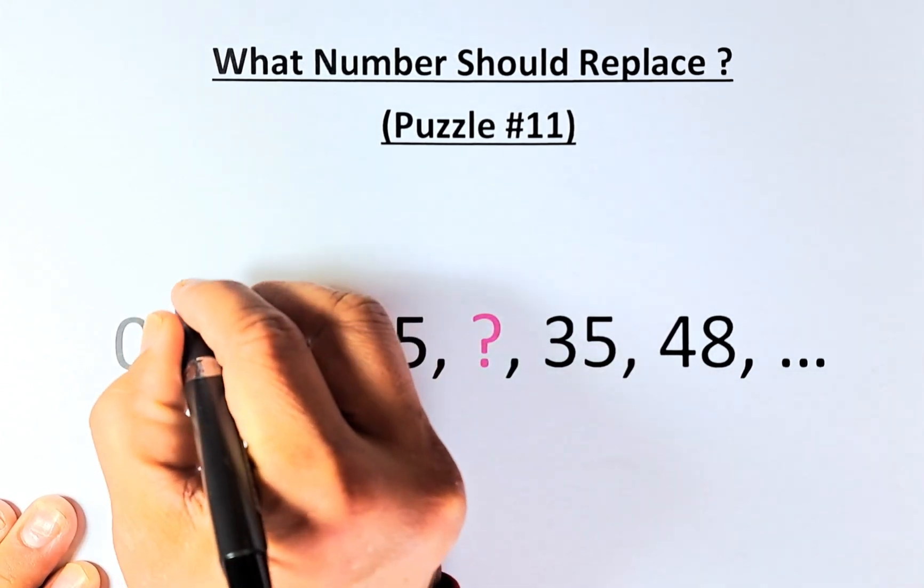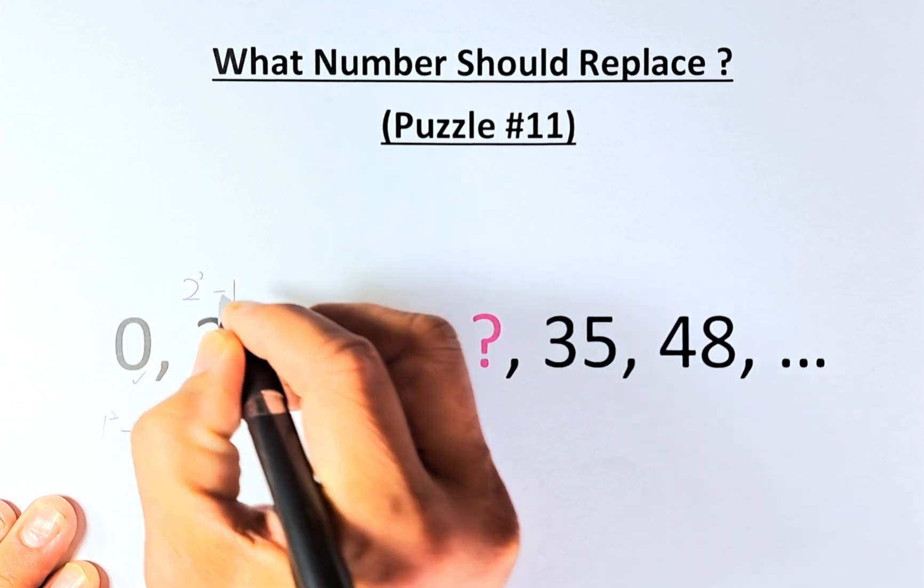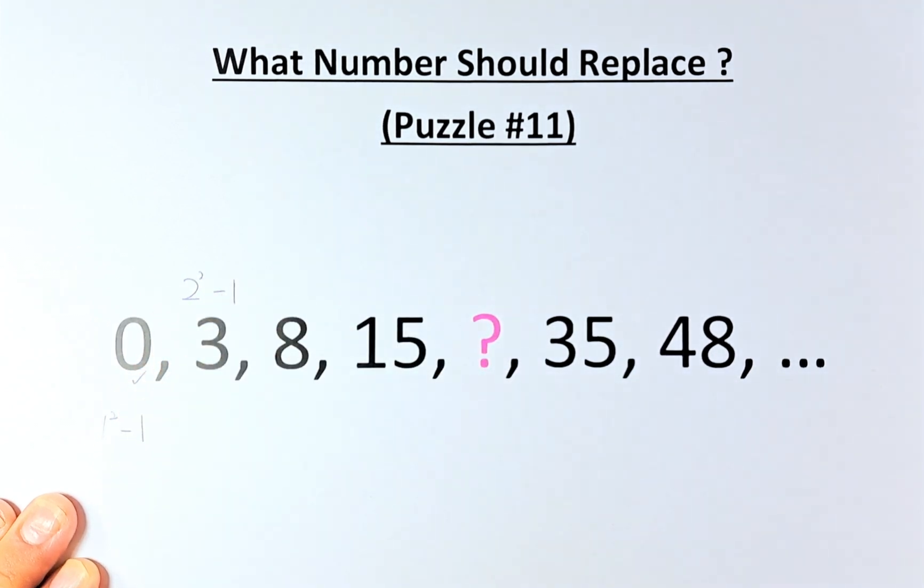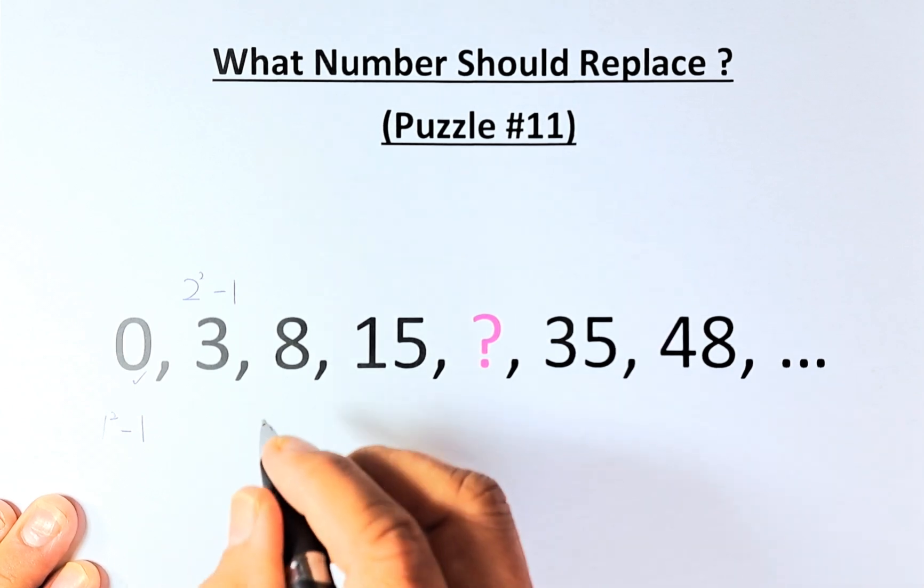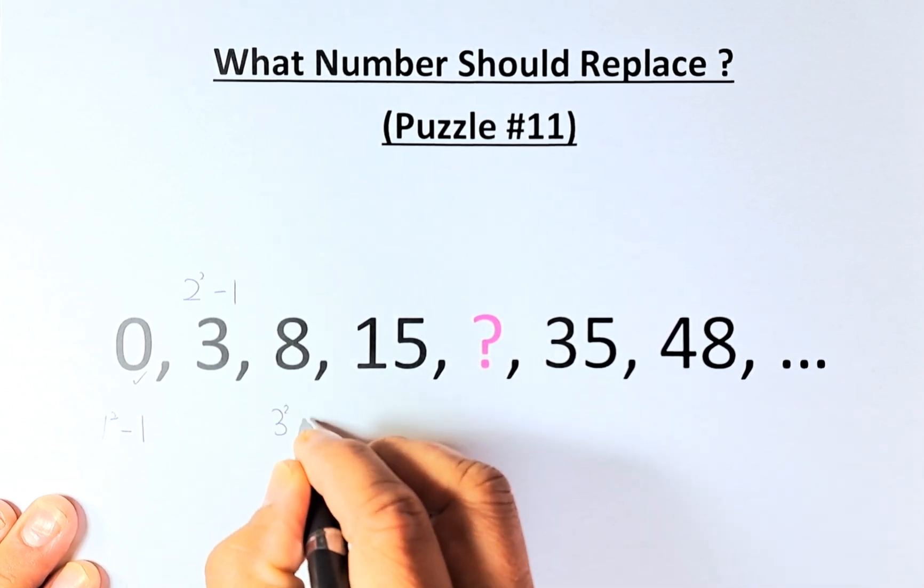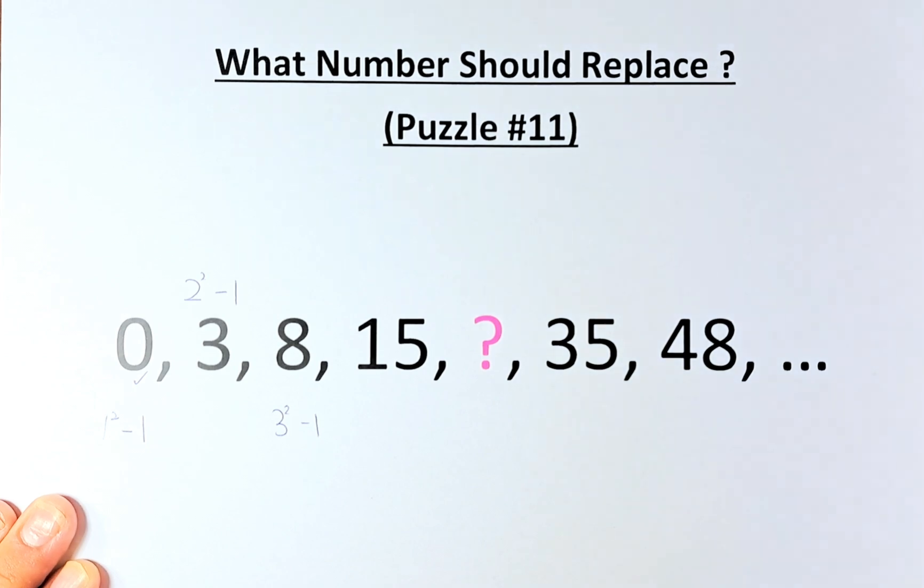3 is 2 squared minus 1. 2 squared is 4, 4 minus 1 is 3. Similarly, 8 is 3 squared minus 1. 3 squared is 9, 9 minus 1 is 8.